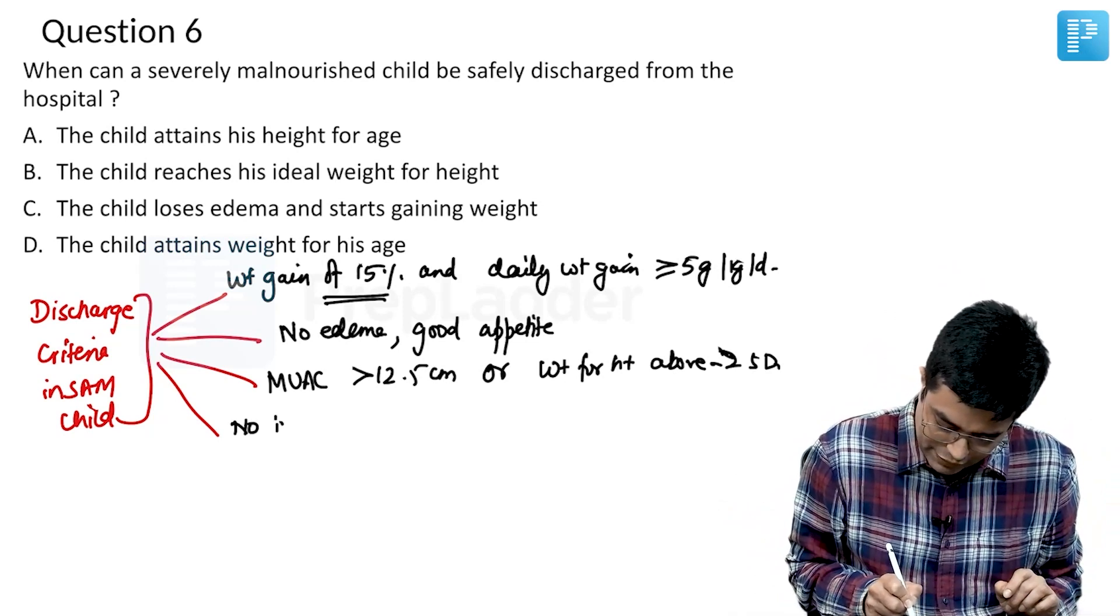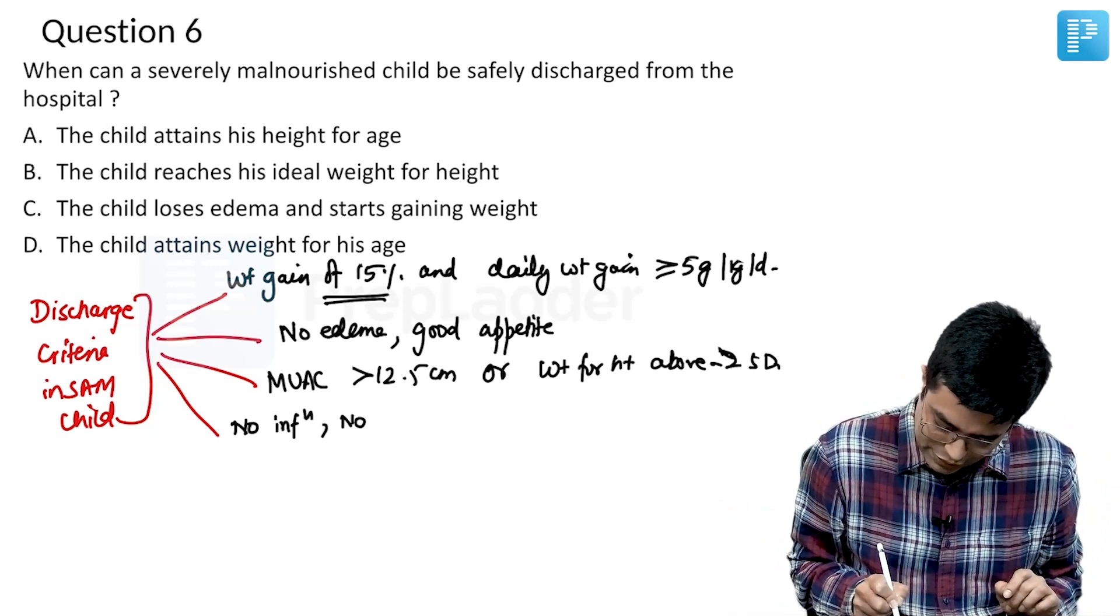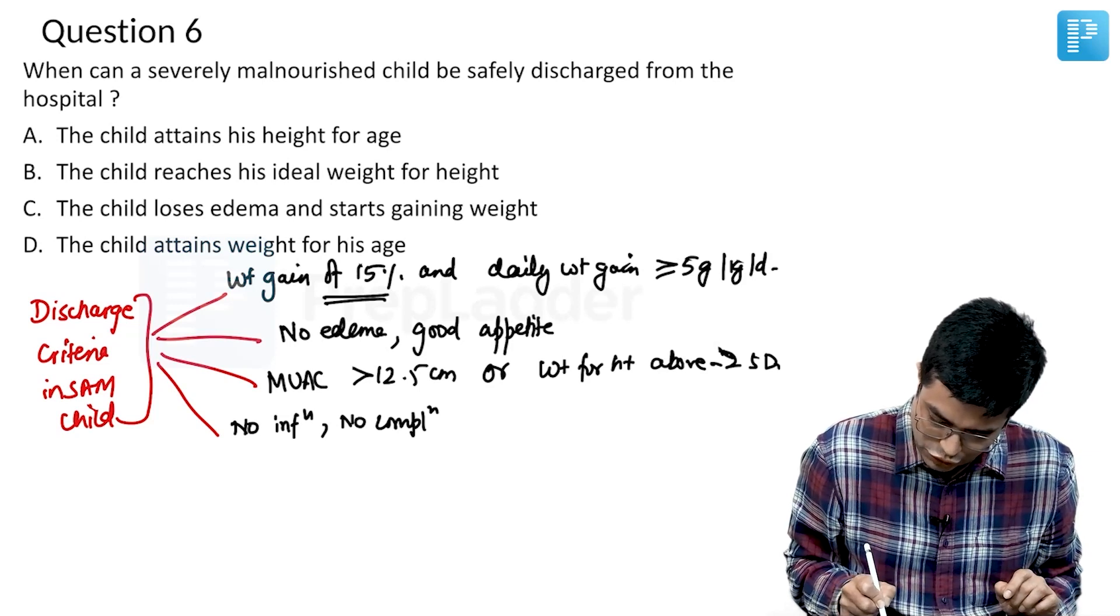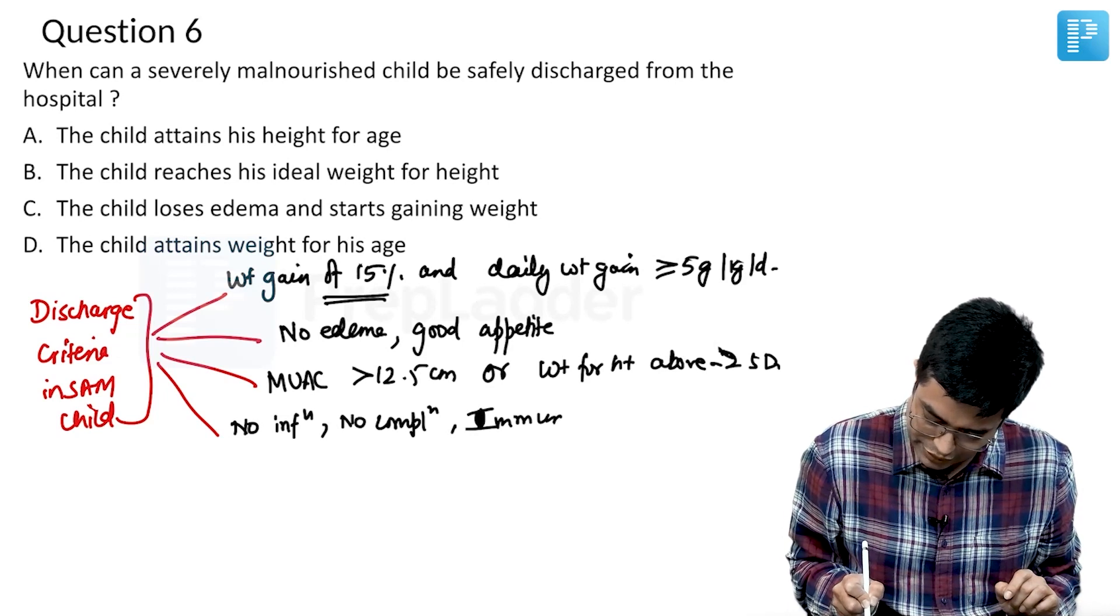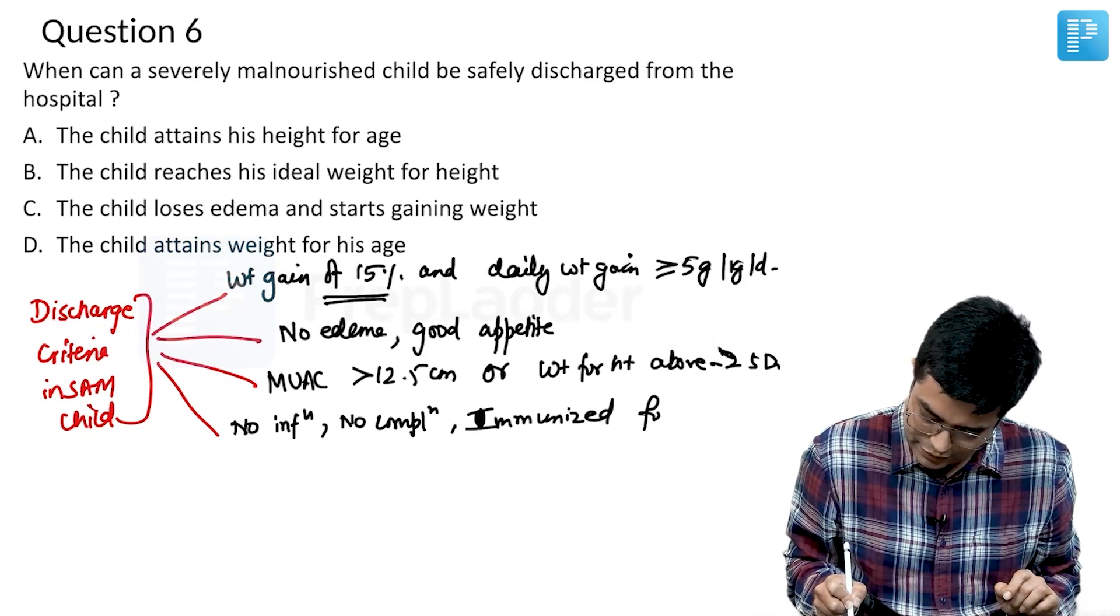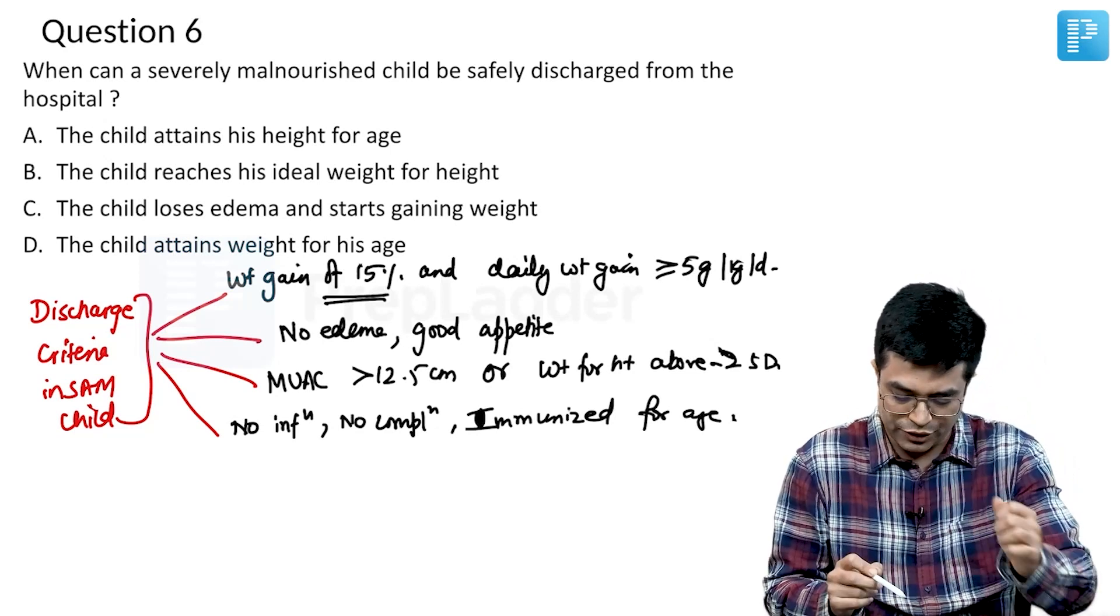And fourth, there should be no infections, no complications and the child should be immunized for age. These are the discharge criteria. Now, have a look at the option.